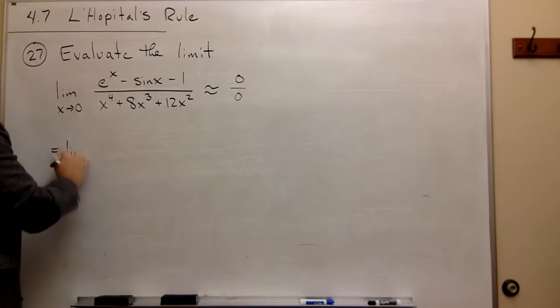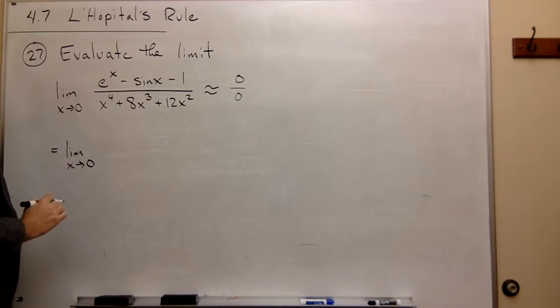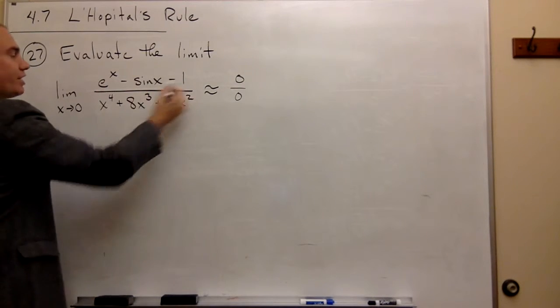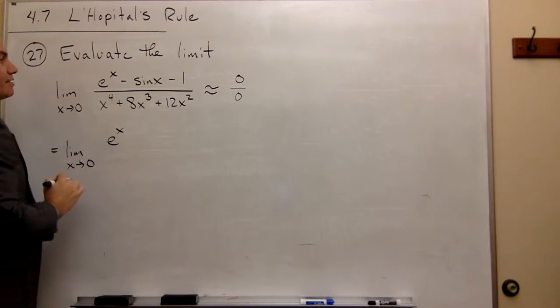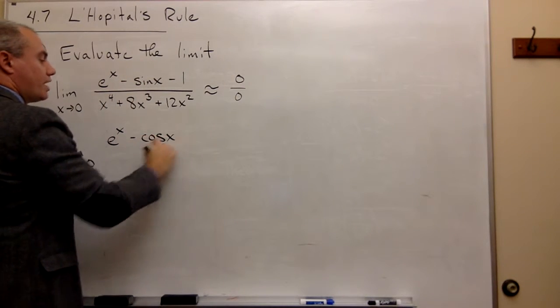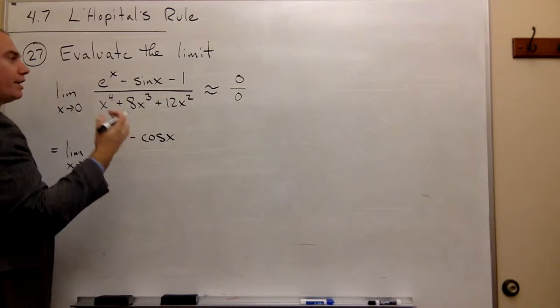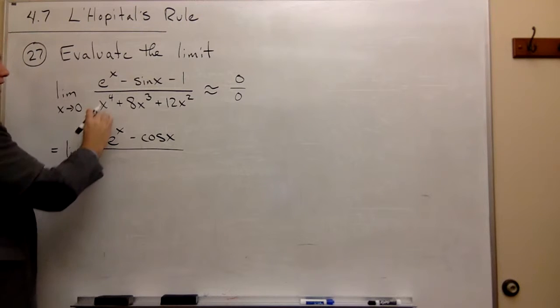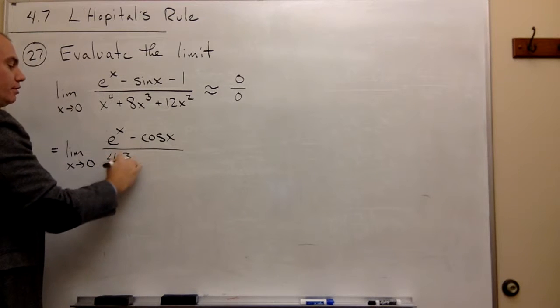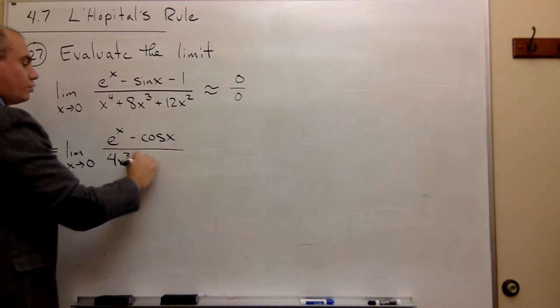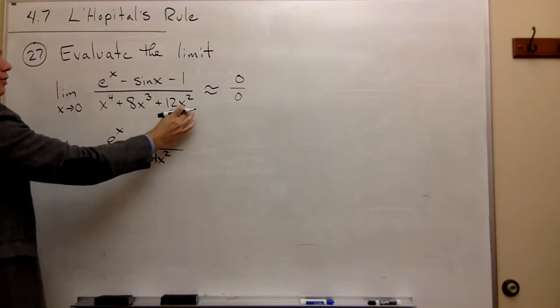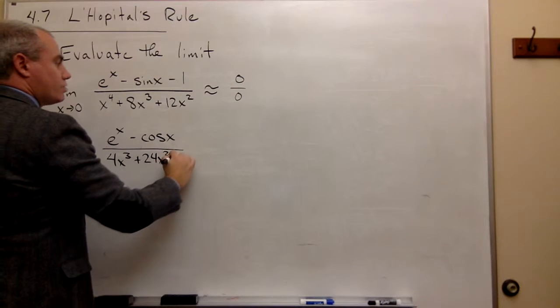This is equal to the limit as x goes to 0 of... let's take the derivative of the top. The derivative of e^x is e^x. The derivative of negative sin(x) is negative cos(x). And the derivative of minus 1 is 0. So the top is done. Now let's take the derivative of the bottom. The derivative of x^4 is 4x^3. The derivative of 8x^3 is 24x^2. And the derivative of 12x^2 is 24x.